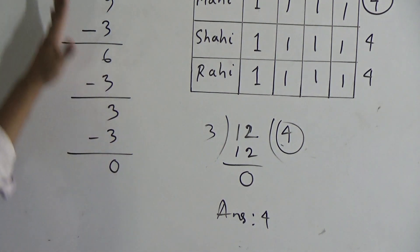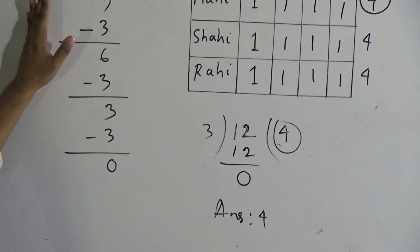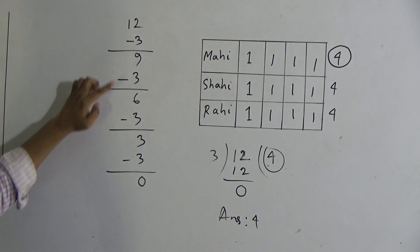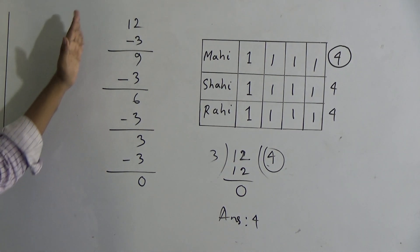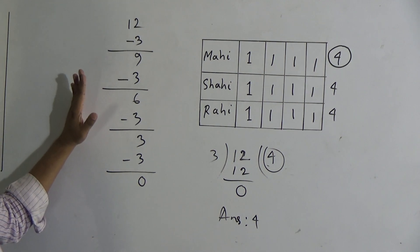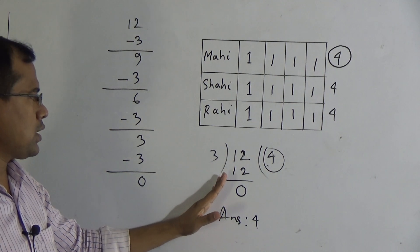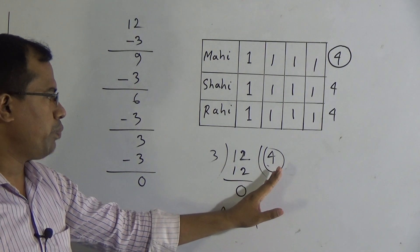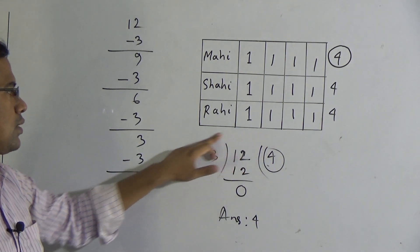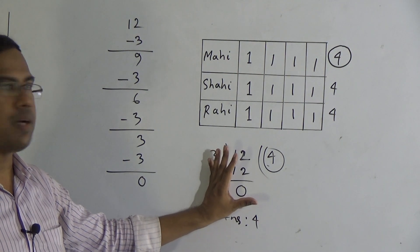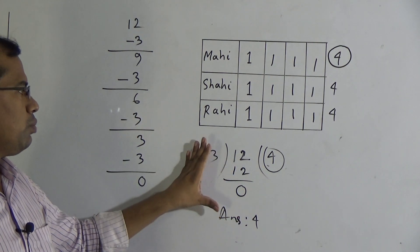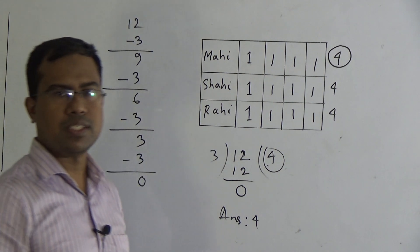So dear students, in this way, for getting the answer I have done total 4 subtractions in this lengthy process. But applying division, I got the answer in a very short time. So we can say division is called the short process of subtraction. Finally, we can say that division is mainly the short process of subtraction.